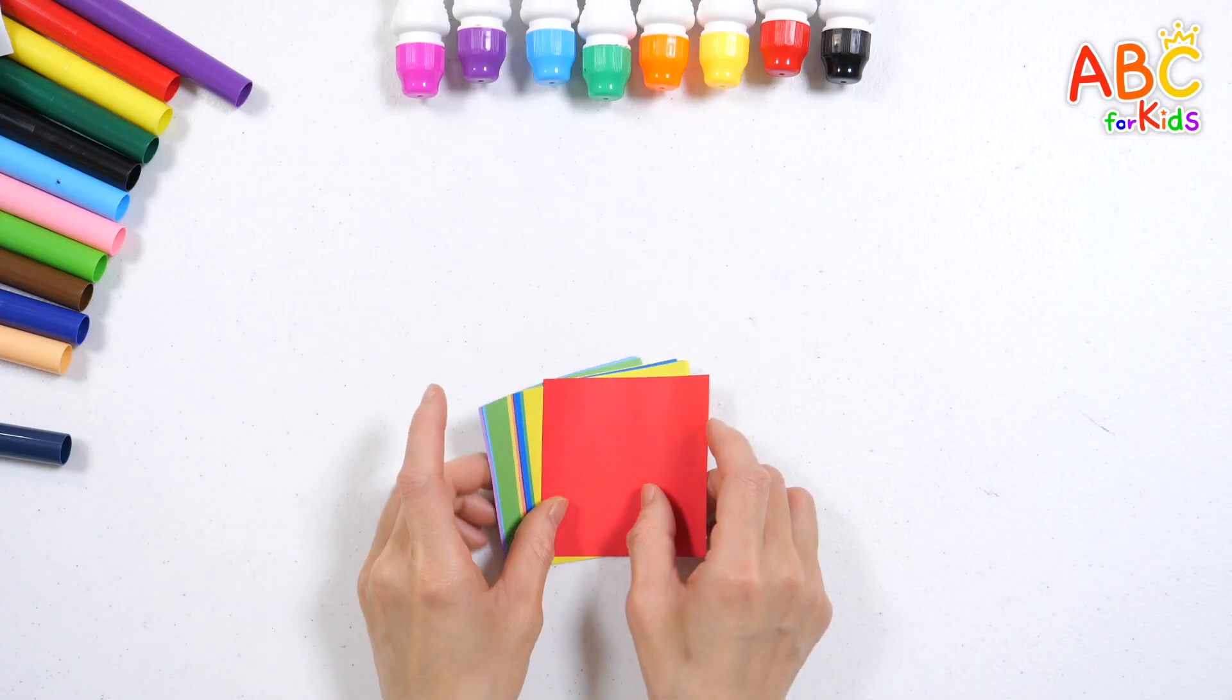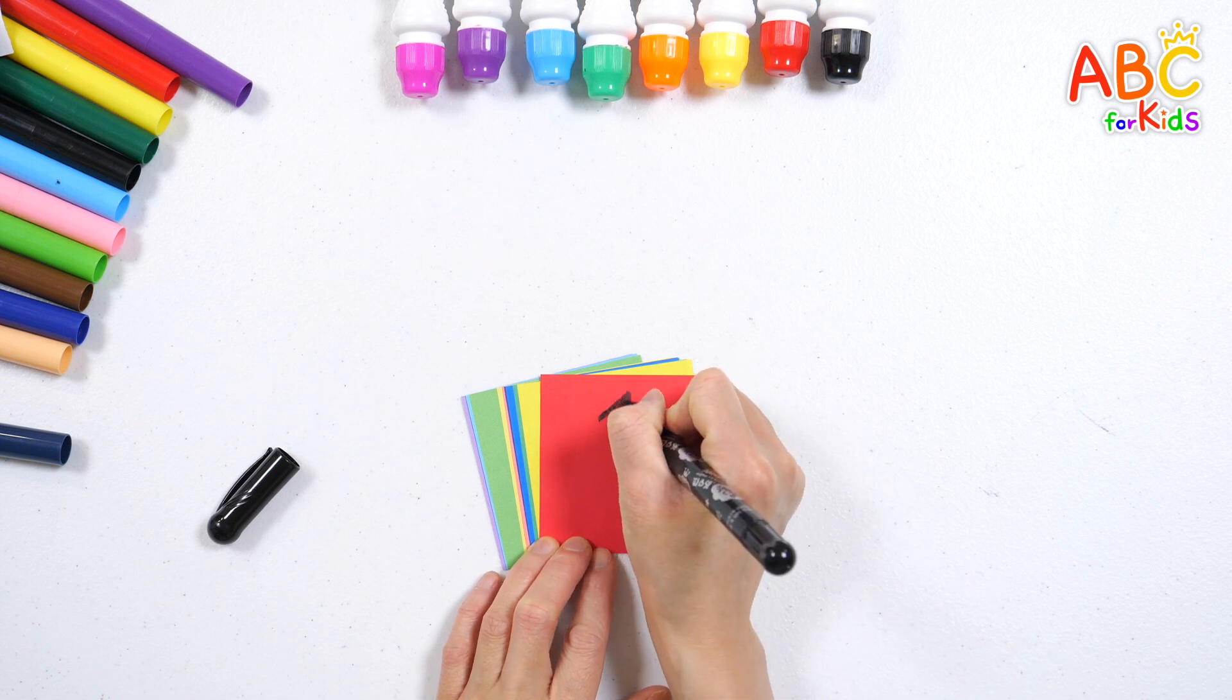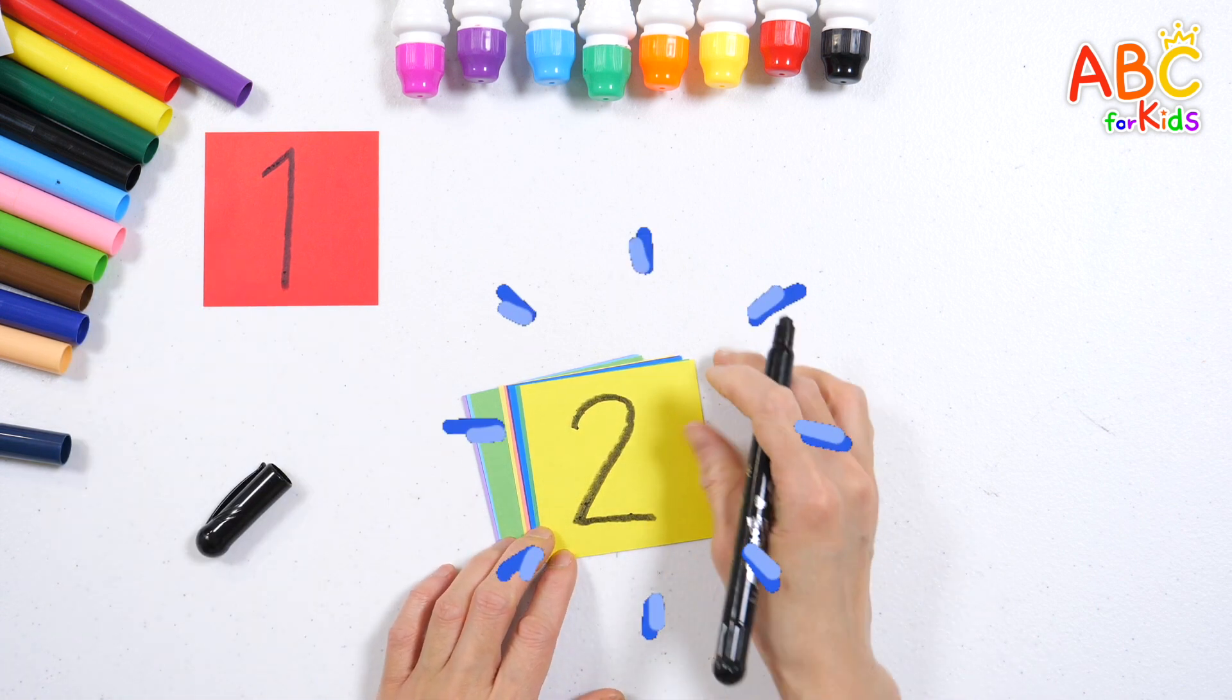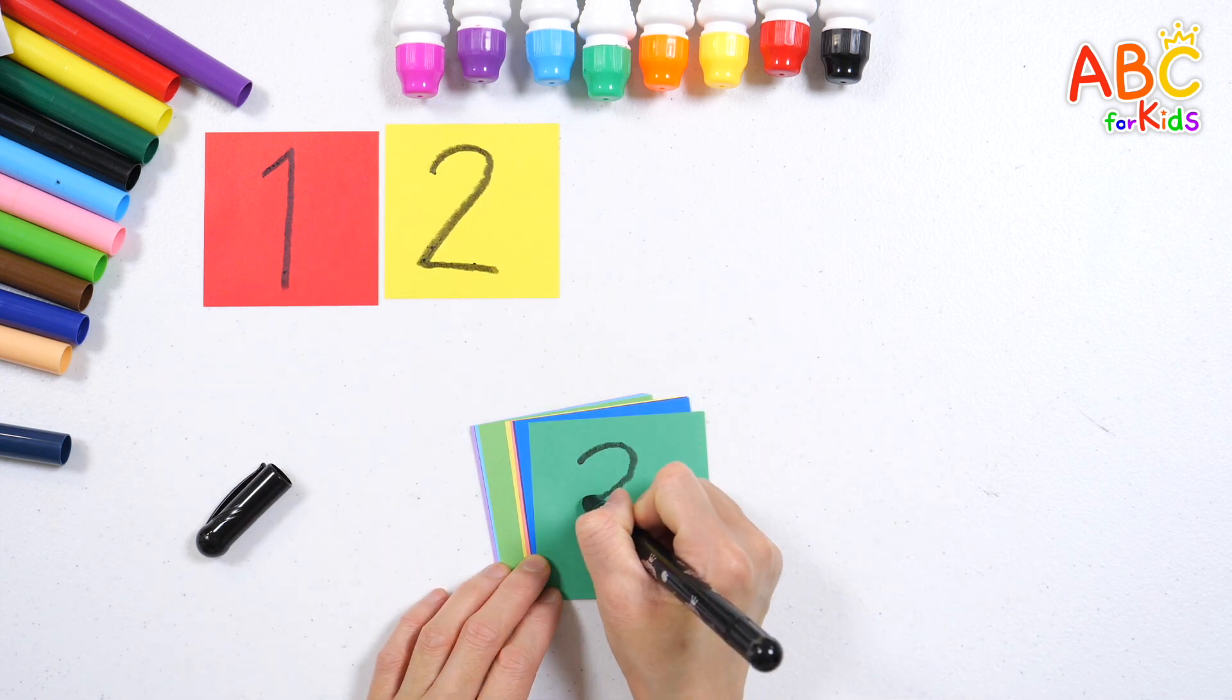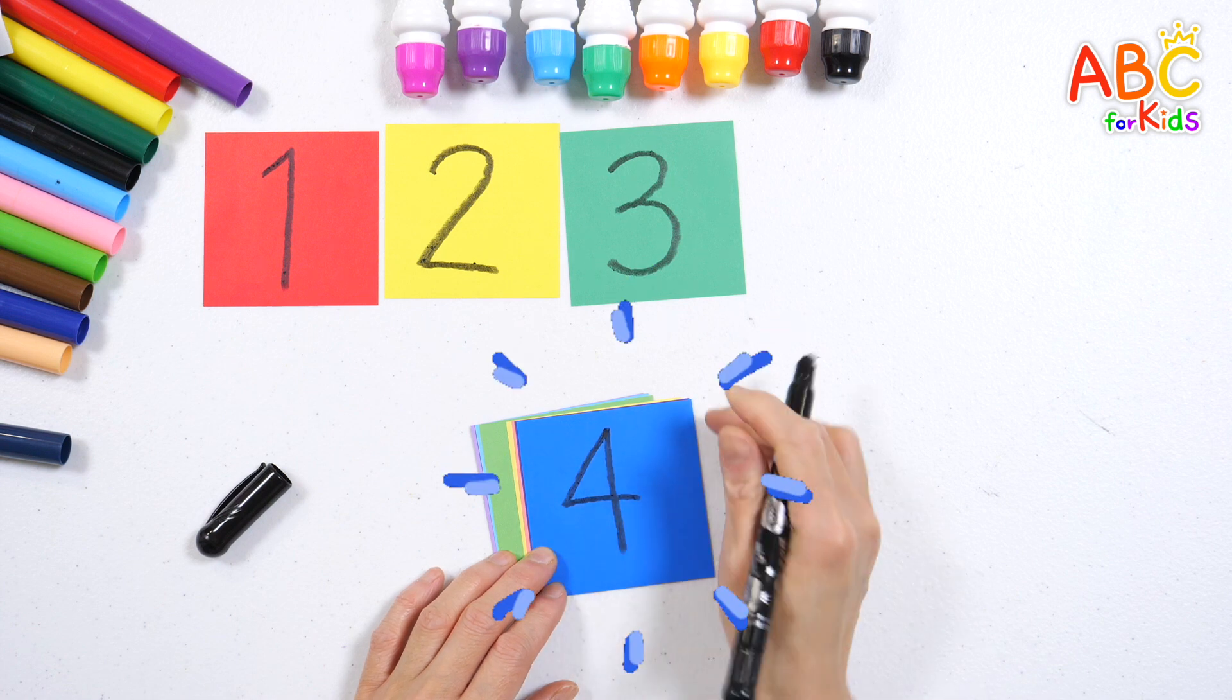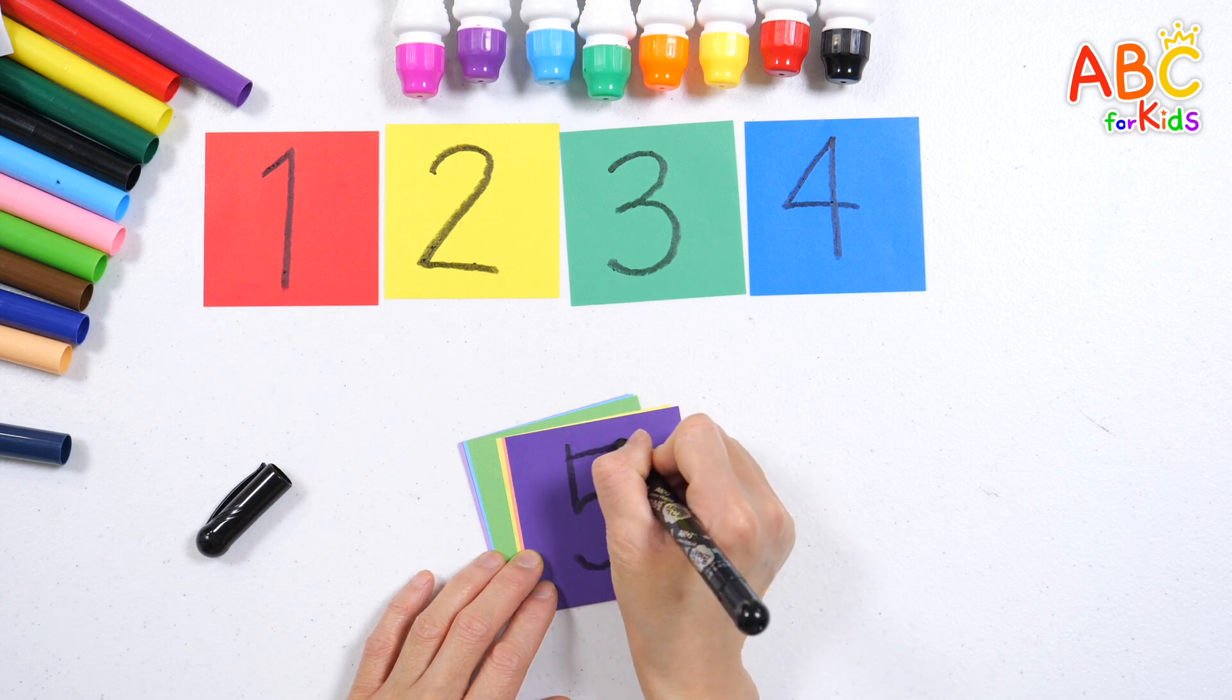Let's write numbers on colored paper. 1, 2, 3, 4, 5.